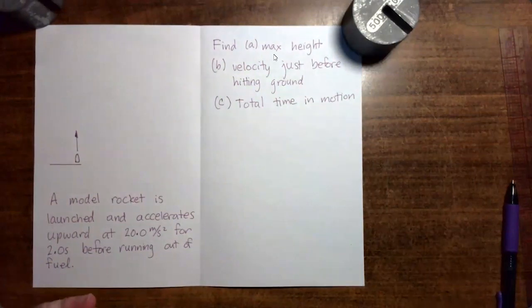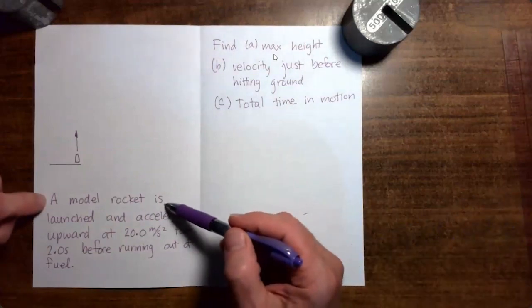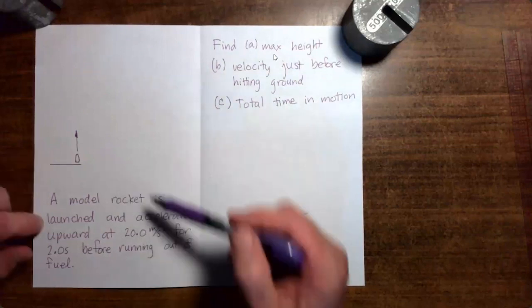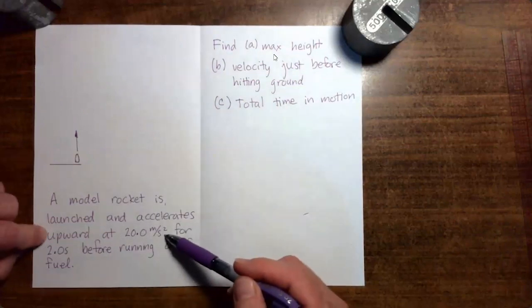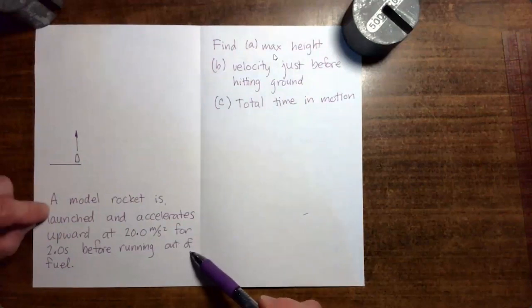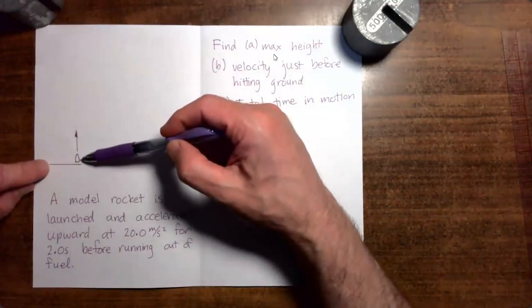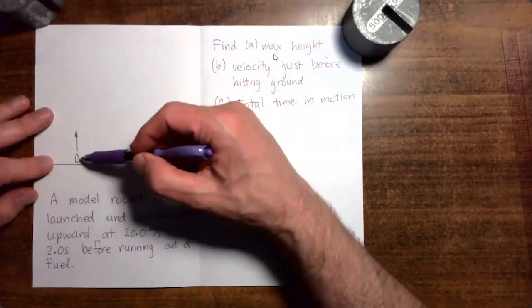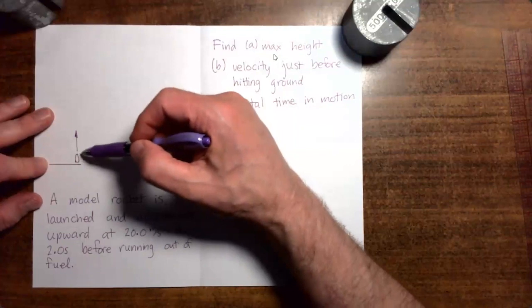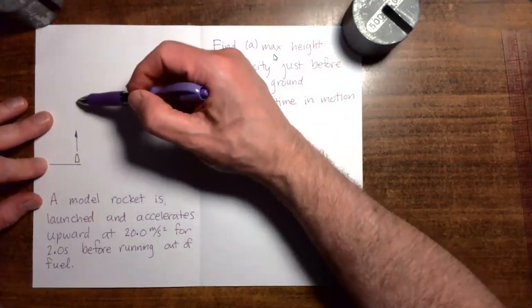In this video, we're going to do our second example problem involving a free-falling object. We have a model rocket which is launched from the ground and accelerates upward at 20 meters per second per second for two seconds before running out of fuel. The rocket is launched from the ground and as the rocket is consuming its fuel, it's going upward and getting faster and faster.